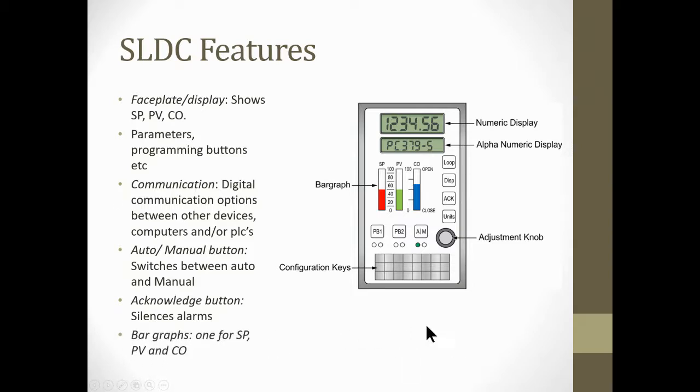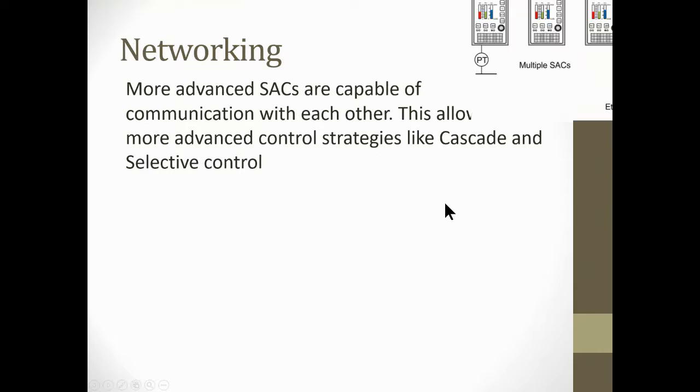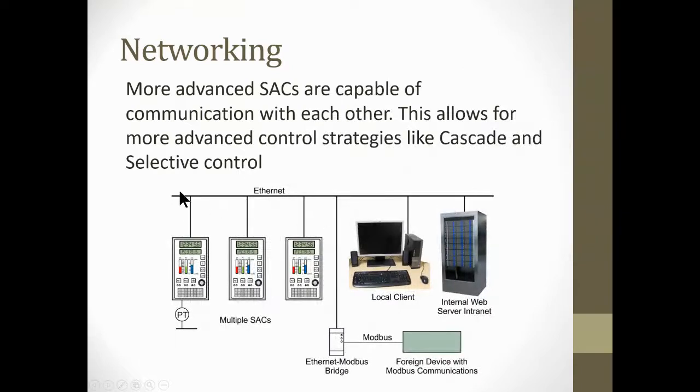Networking: now they're more advanced and capable of communicating with each other. This allows for more advanced process control strategies like cascade and selective control. Here you got an ethernet cable to each one of these SACs. Again, this stuff is fairly old because basically we use DCS now.